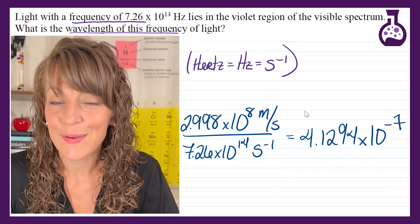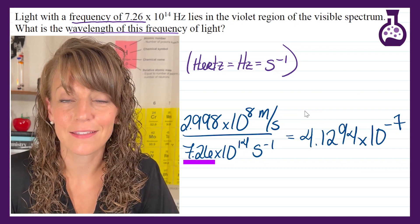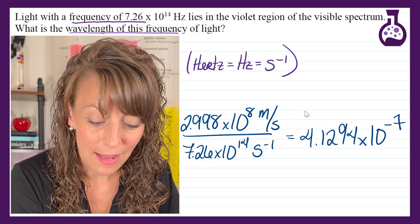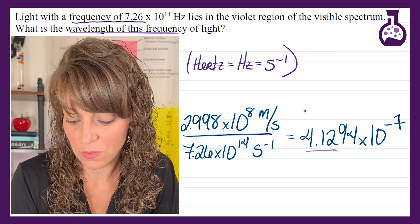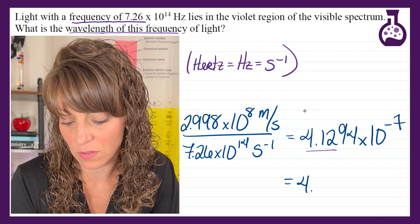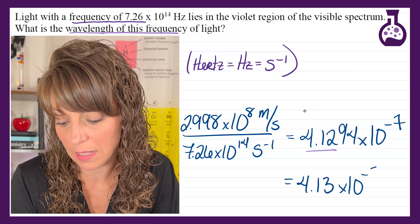If we're worried about sig figs here, we're going to take a look at our frequency. There's only three sig figs in our frequency so we can have three sig figs in our answer. So we're going to go ahead and round this answer to 4.13 times 10 to the negative 7.